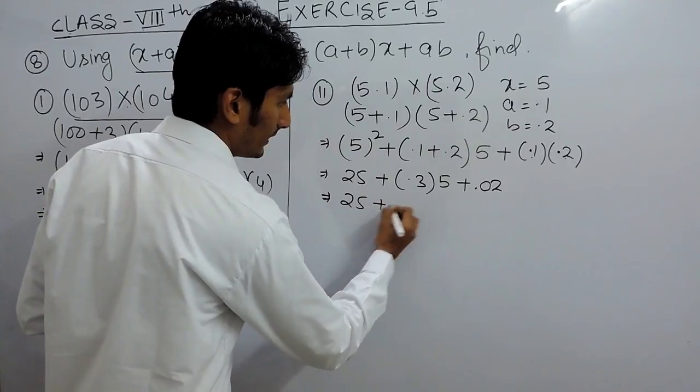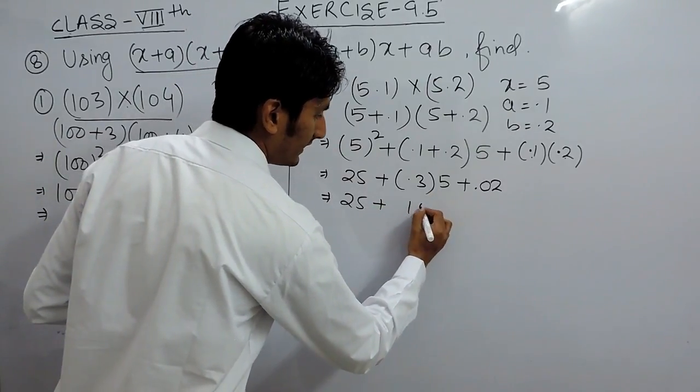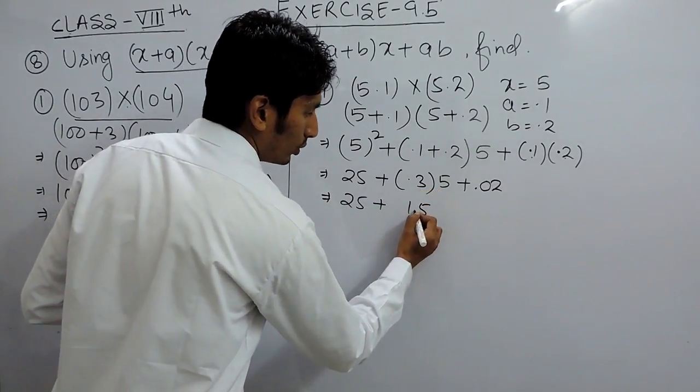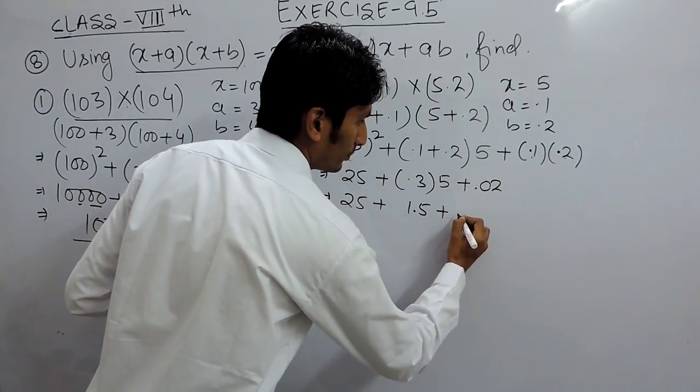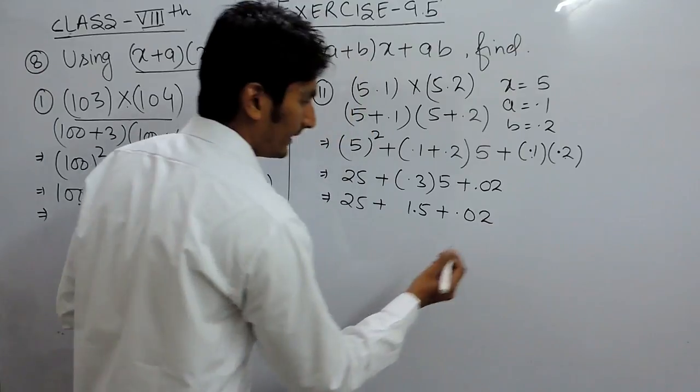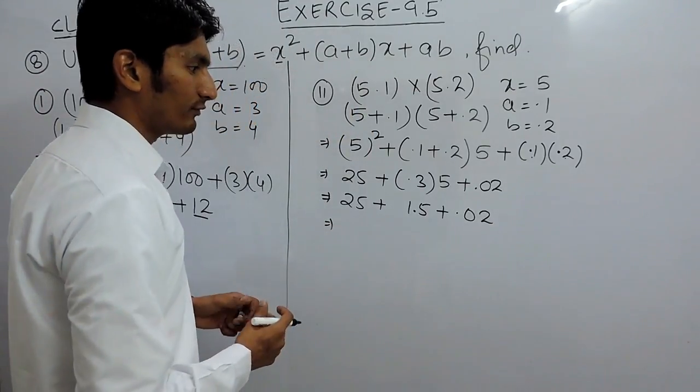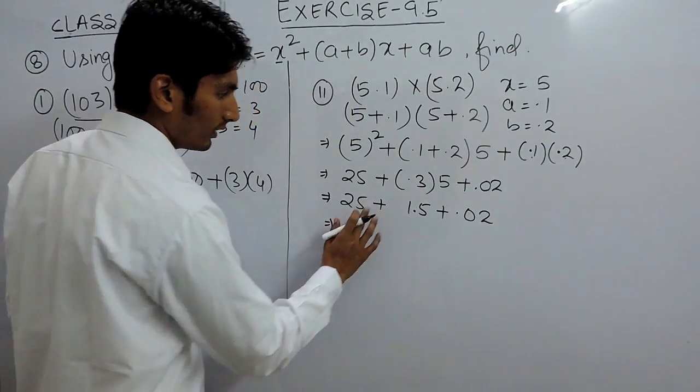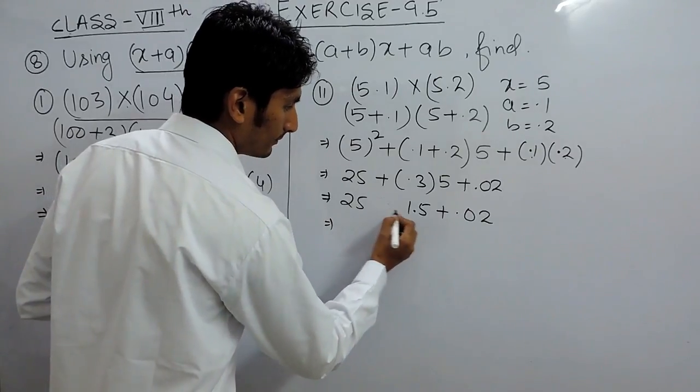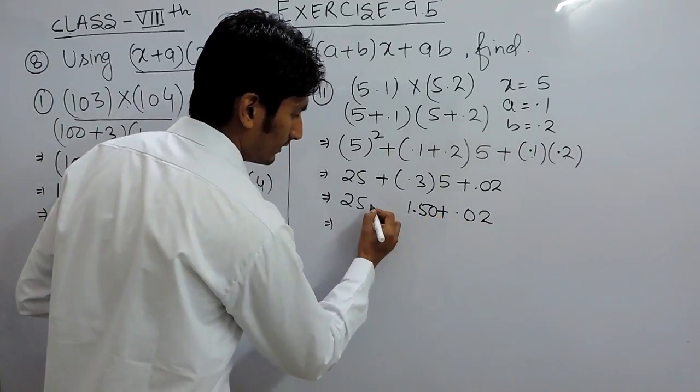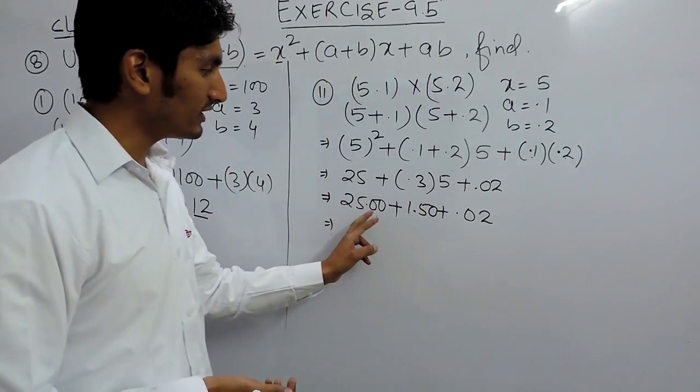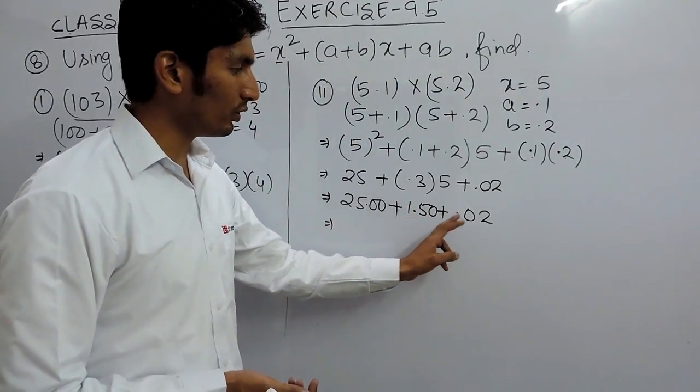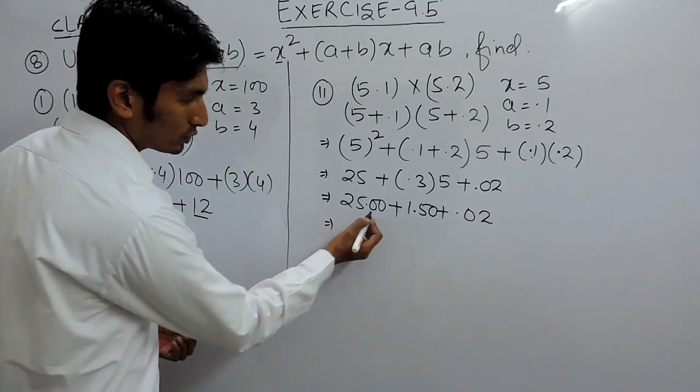Again, this is 25 plus 5 into 3 is 15 and there is only one decimal after the decimal. So, this will become 1.5 and this will remain as it is. Now, we have to solve this. To make them similar, I can write this as 25.00, 1.50 and this is 0.02.